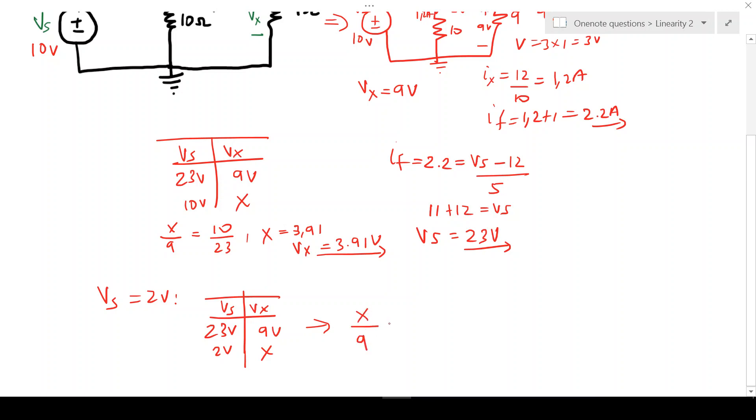So I can say X over 9 is equals to 2 over 23. And X will then give me 9 times 2 divided by 23, and that gives me a value of 0.78 volts. Therefore, Vx is going to give me 0.78 volts. Thank you for watching and enjoy the course.